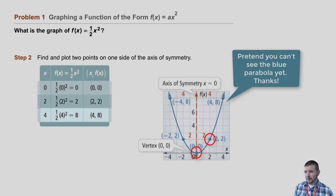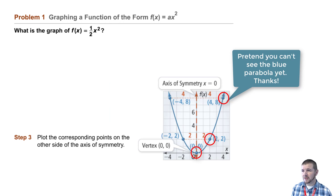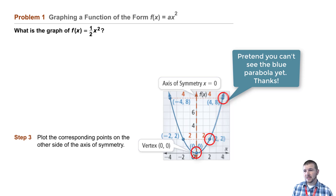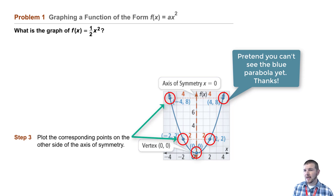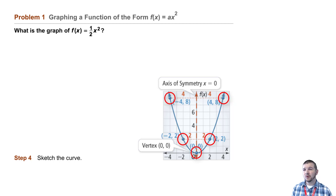For an input of 4: 4 squared is 16, and 16 times 1 half is 8, leading to the ordered pair 4 comma 8. We graph that point as well. Step 3: plot the corresponding points on the other side of the axis of symmetry. Because the parabola is symmetric about the y-axis, we can find the mirror images of the right-side points on the left: negative 2 comma 2 and negative 4 comma 8. We now have five points and sketch a smooth curve connecting them, forming the parabola.